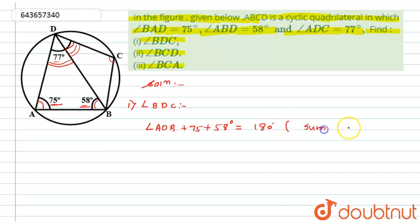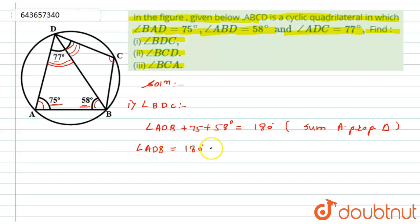From the triangle angle sum property, angle ADB equals 180 minus 75 minus 58, which gives us 47 degrees. Let this be equation 1.